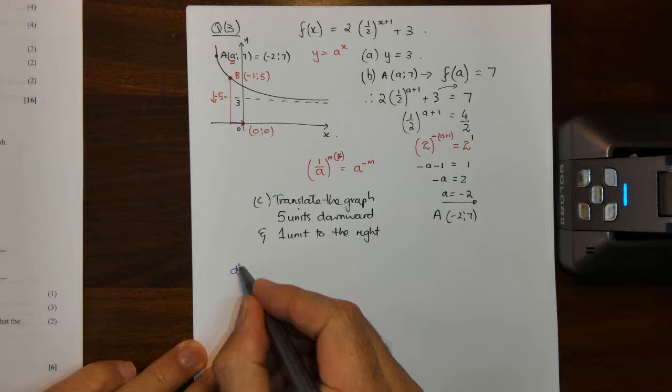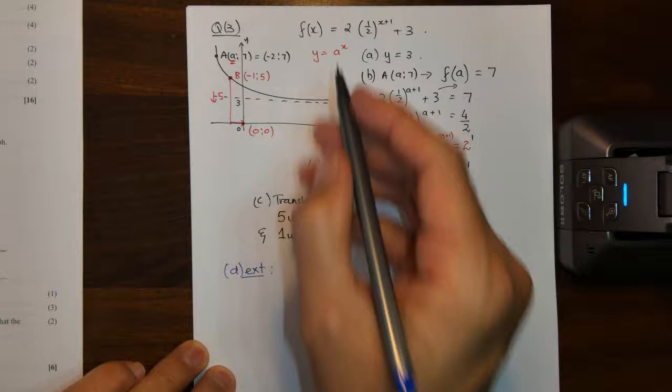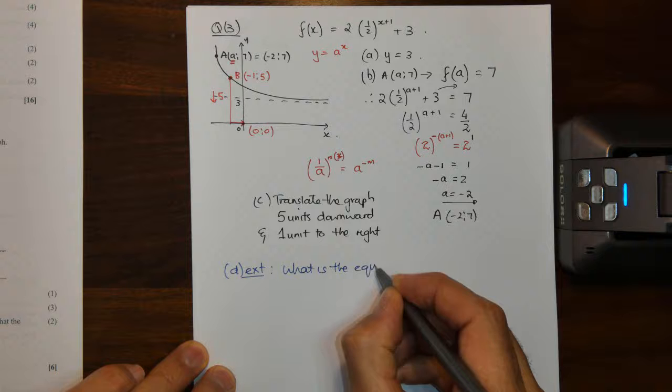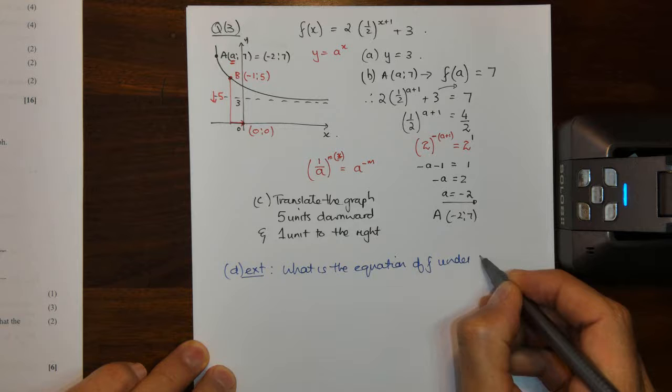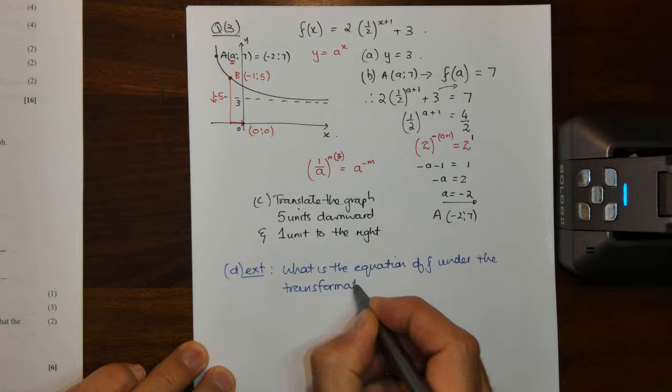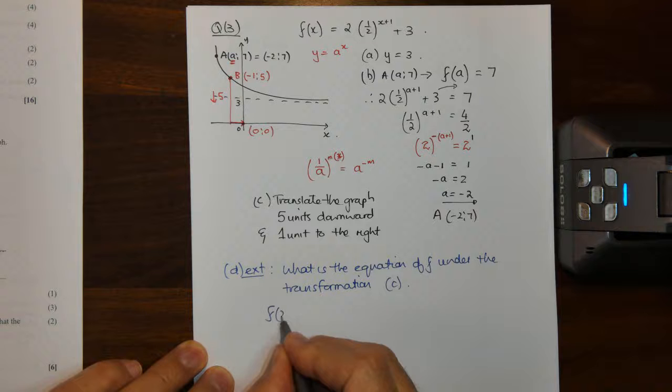So this is an extension question on question C. I'm just going to put ext for extension. We could have said what is the new equation of F under the transformation that you performed in C.